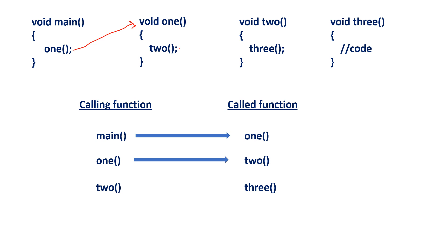Because in one function it is calling two function. In this particular scenario, one is called as calling function and two is called as called function. Coming to the third scenario, two function is also calling three function. That means two becomes calling function and three becomes the called function.